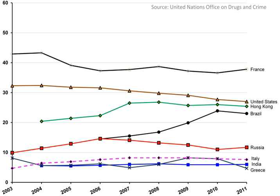The government on 20 September 2018 launched the National Database on Sexual Offenders. The database contains entries of offenders convicted under charges of rape, gang rape, POCSO and eve teasing. The portal contains 4.4 lakh entries of cases reported since 2008. It is managed by the National Crime Records Bureau and is accessible only to law enforcement agencies for investigation and monitoring purposes.